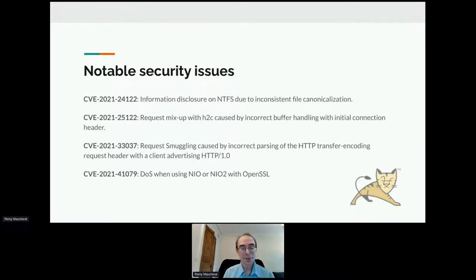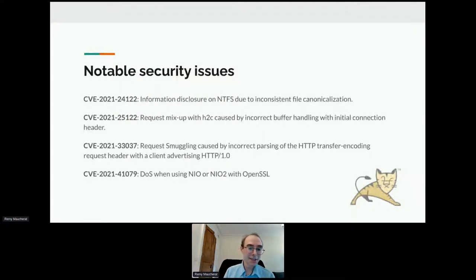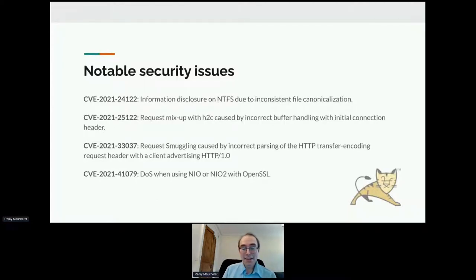We've had a few notable security issues this year. All of these were important level — none were critical, but still notable. The first one is an information disclosure on NTFS. Tomcat relies on file canonicalization for security, especially case sensitivity. There was a discrepancy in the JVM behavior in that area with NTFS, basically causing bypassing of security constraints — so that's an information disclosure.